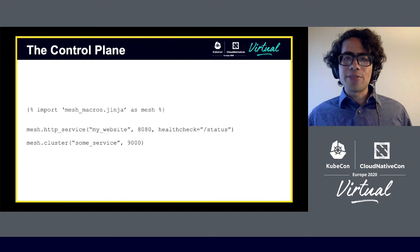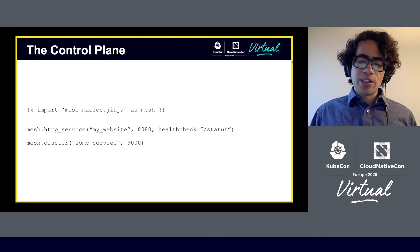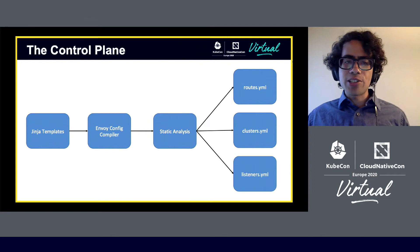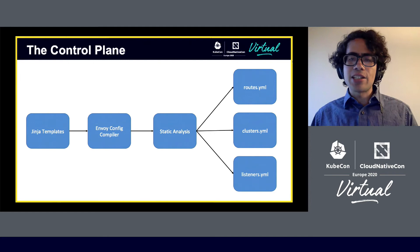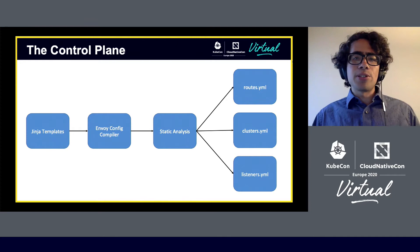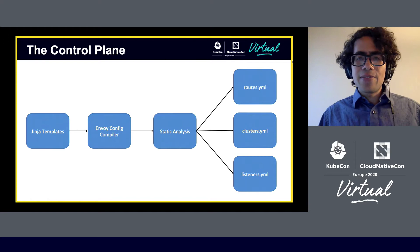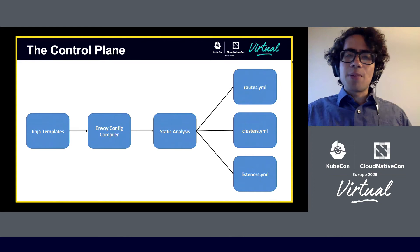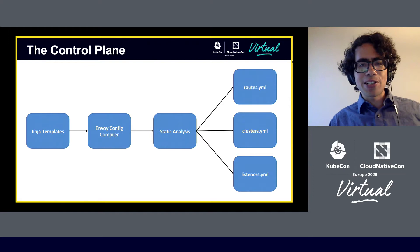Having all the configuration in a single repository also allowed us to do a lot of powerful static analysis and compiler-level controls on the configuration. When a person is compiling the Jinja templates, we can check and verify that routes always point to a valid cluster, so we never end up with a bad route in production. We were also using Envoy's schema validation tool to make sure all configuration options would be recognized by the data plane. This saved us many times from bad configuration options — even just typos in a pull request — and the CI tools would catch them before they made it into the pipeline.